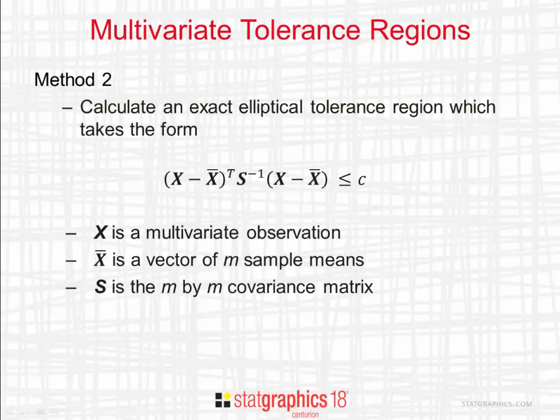The second method creates an exact elliptical tolerance region using the equation shown here. X is a multivariate observation, x-bar is a vector of m sample means, and S is the m by m covariance matrix. The tolerance region consists of all values of x that are less than or equal to some constant c.